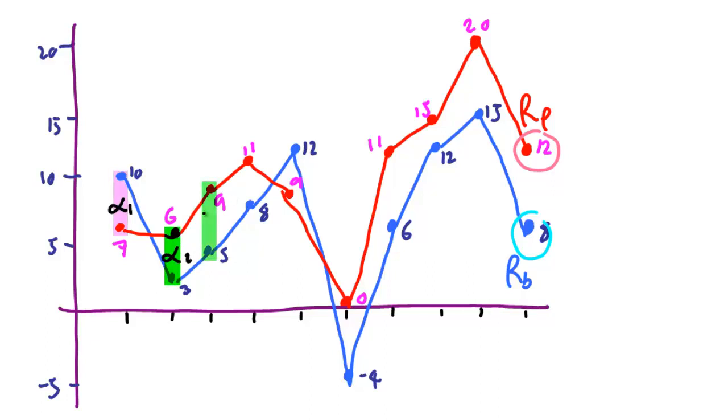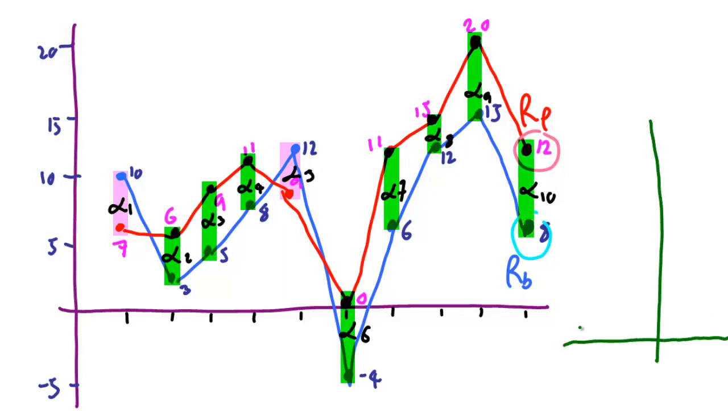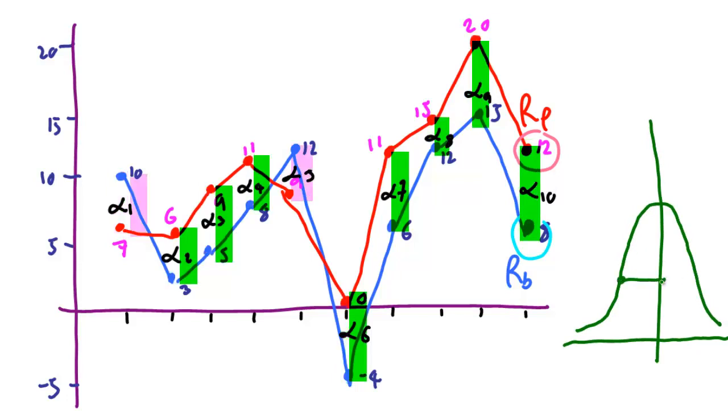The difference between the portfolio and the benchmark is called the active return. You might also know it as Jensen's alpha but we'll get to that in another video. The standard deviation of all these active returns is called the tracking error.